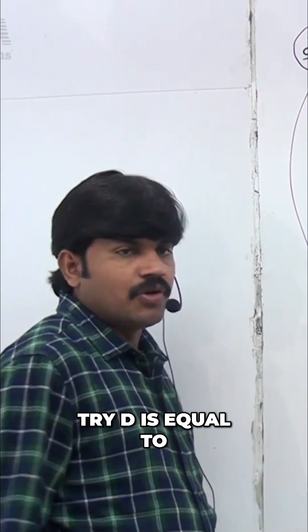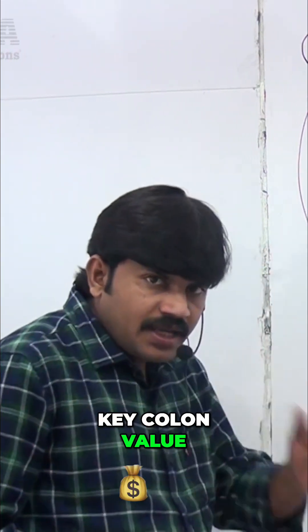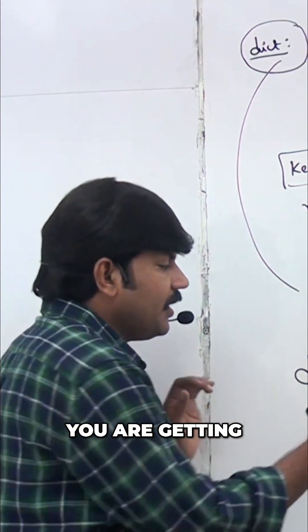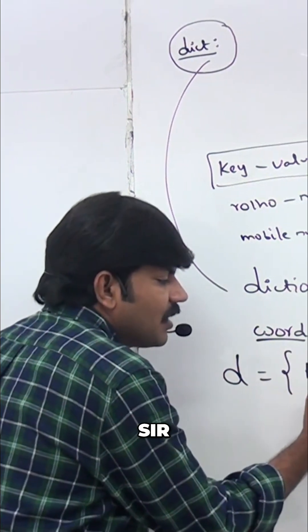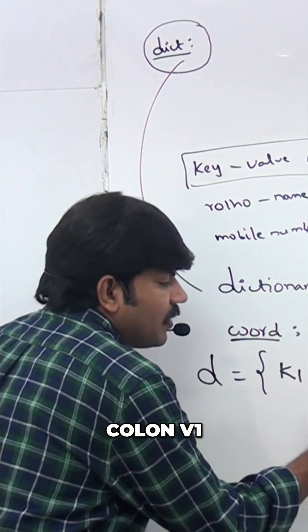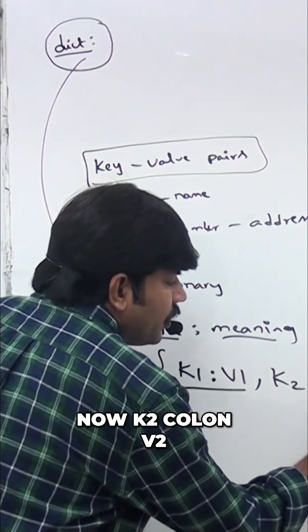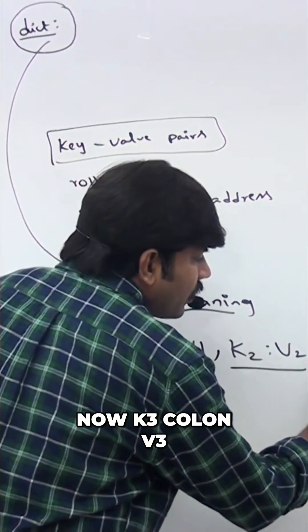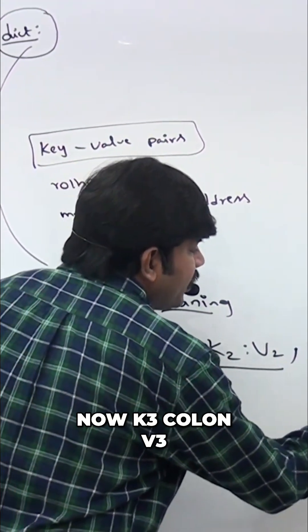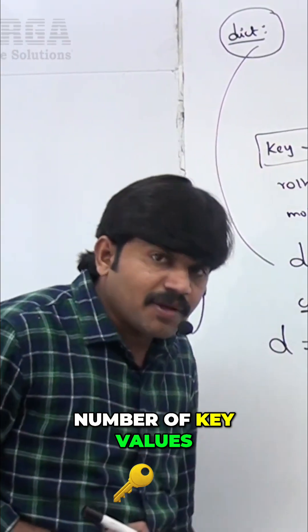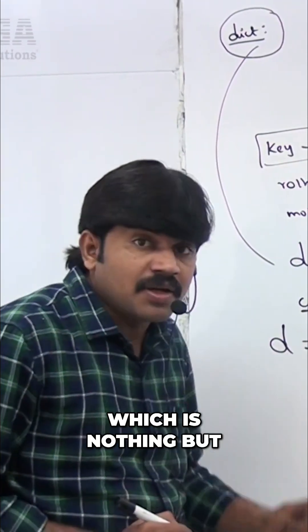D is equal to Sir Curly Brace open. Key colon value. We are getting key K1 Sir colon V1. Okay. Now, K2 colon V2. Okay. Now, K3 colon V3. Like, you can take any number of key values which is nothing but what? Dictionary.